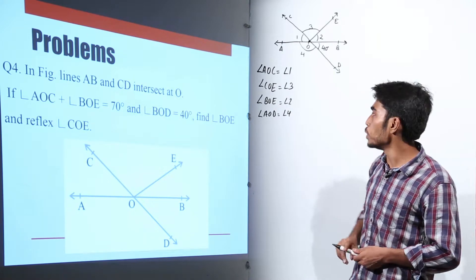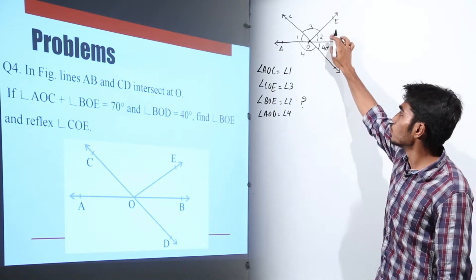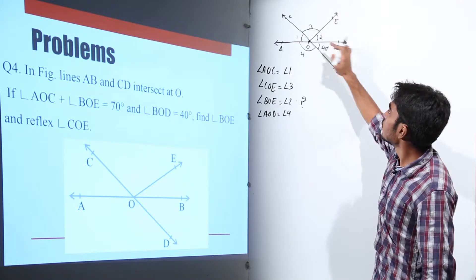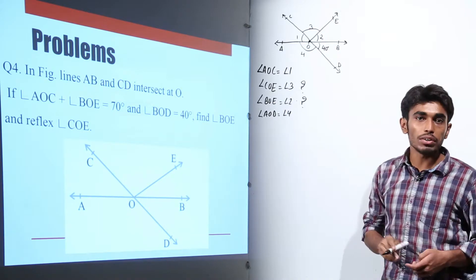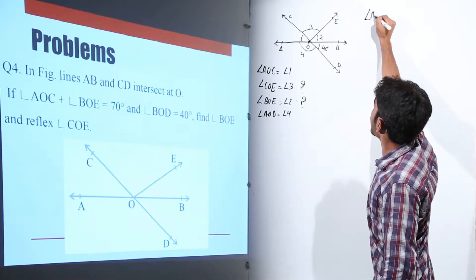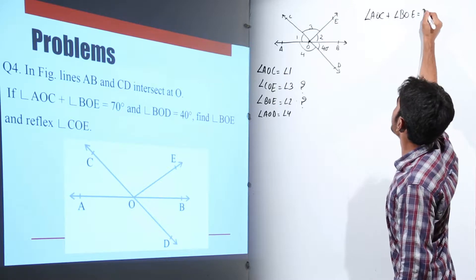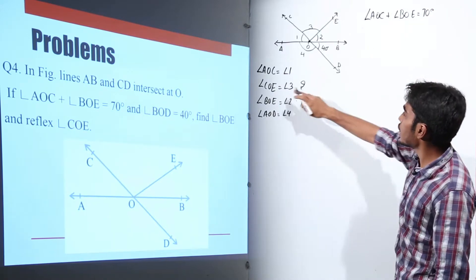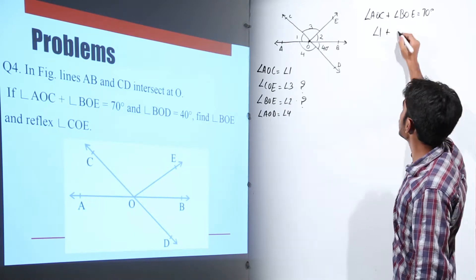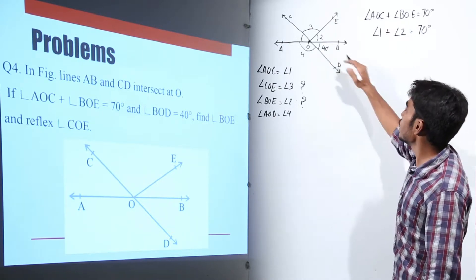We have to find angle BOE, which is angle 2, and angle COE, which is angle 3. These are the two unknown angles. The given data is: angle AOC plus angle BOE equals 70 degrees, that is angle 1 plus angle 2 equals 70 degrees. And angle BOD equals 40 degrees.